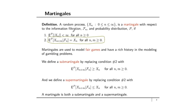A quick comment on what I mean by information filtration. The information filtration Fn is just a way of recognizing the information we have at time n. So Fn will denote all of the information in our model that we know at time n. Usually it will be the case that Fn is equal to the information given by X1 up to Xn — basically recognizing that at time n we've already seen the values X1 up to Xn.